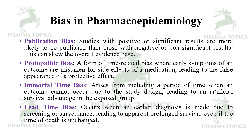Lead time bias occurs when an earlier diagnosis is made due to screening or surveillance, leading to apparent prolonged survival even if the time of death is unchanged. This has been a short overview of pharmacoepidemiology, its methods, and bias. I hope it will be useful for you. Thank you for listening — happy learning! Kindly share this with your friends, subscribe to our Pharma Topics channel, like this video, and go through all the series available in the Clinical Research and Pharmacovigilance playlist.